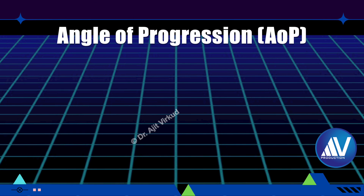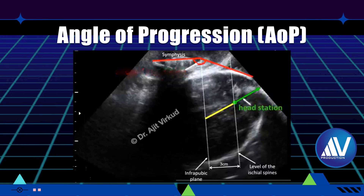In modern obstetrics, head station can be measured objectively by determining the angle of progression or head-to-perineum distance. The probe is placed between the two labia in the mid-sagittal plane. The pubic symphysis joint is seen as an oblong echogenic structure ideally displayed in horizontal position, and the fetal skull as anterior and posterior tabula. The angle of progression is the angle between a line along the longitudinal axis of the pubic bone and a line from the inferior edge of the pubic bone to the leading edge of the fetal cranium. It can also be measured dynamically during a uterine contraction and bearing down. Intrapartum ultrasound is not yet widely used, even though it is more precise and reproducible than clinical examination.